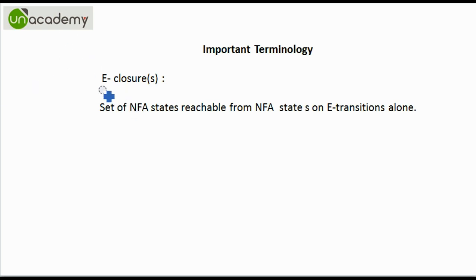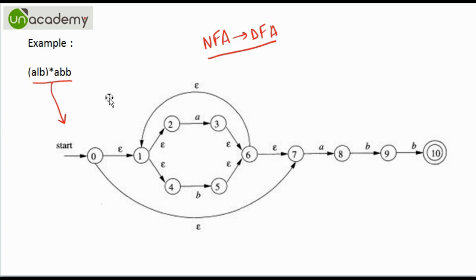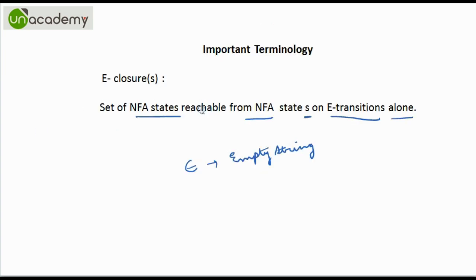There is only one important terminology, that is the epsilon closure of S. The epsilon closure is the set of NFA states reachable from NFA state S on epsilon transitions alone. Epsilon is an empty string, and as we had seen in the NFA video, we can have epsilon transitions in the NFA. As you can see here, we are reaching state 0 to state 2 on epsilon transitions alone. Epsilon closure is all the set of states reachable from a particular state S on epsilon transitions alone.